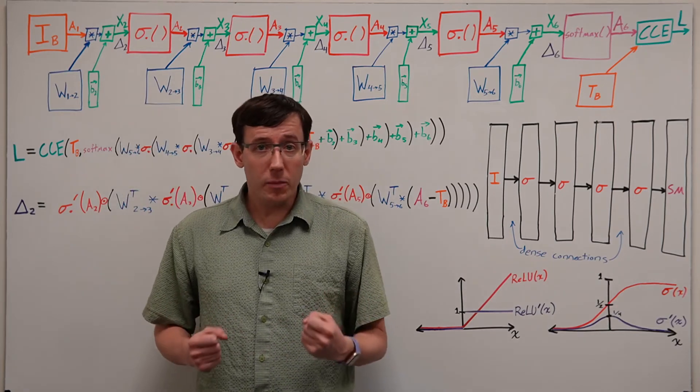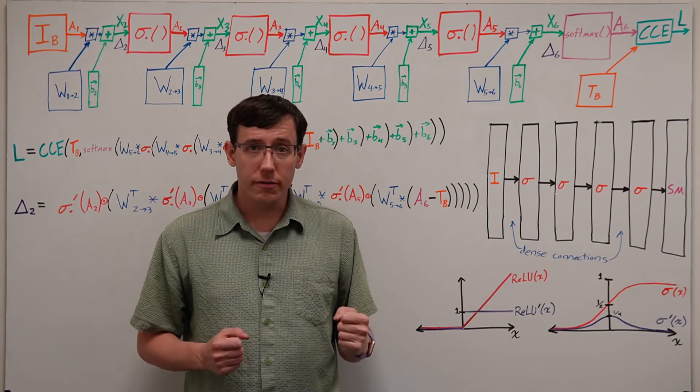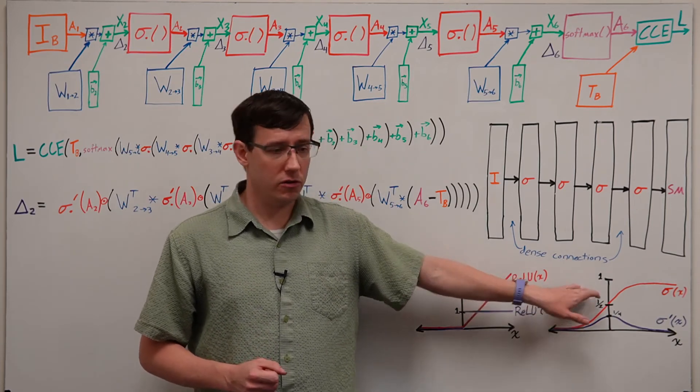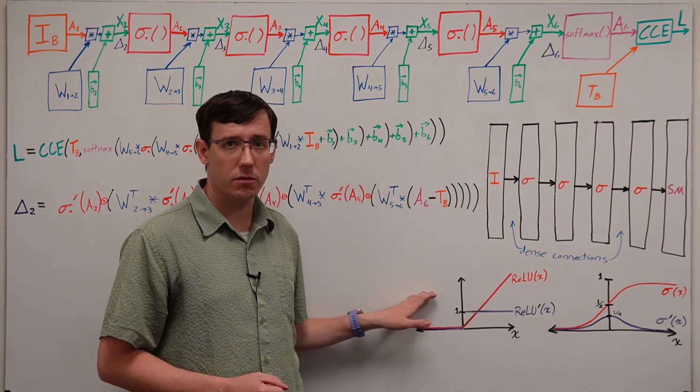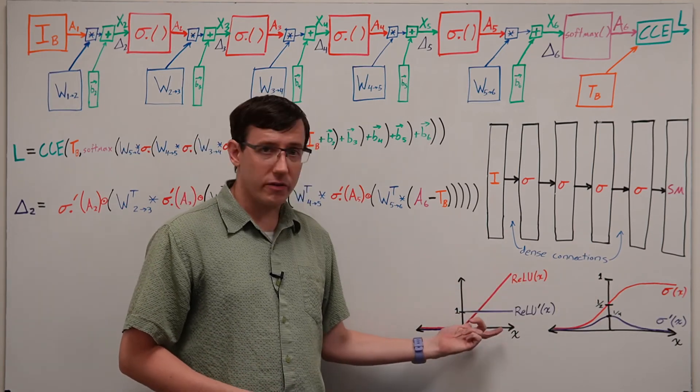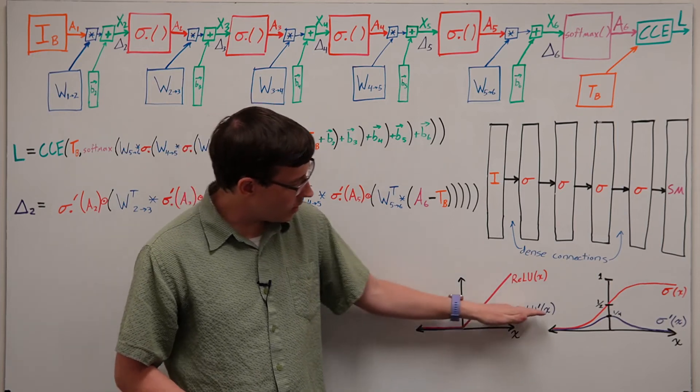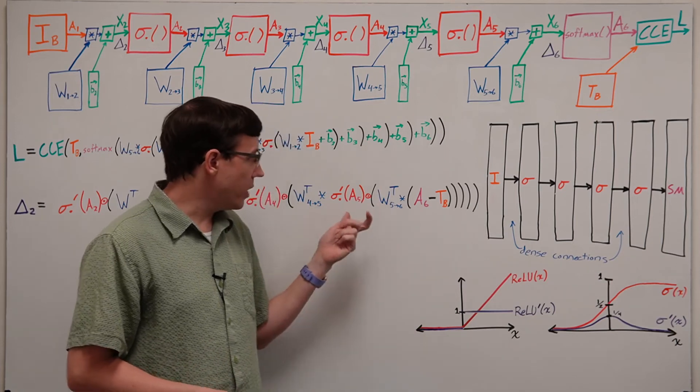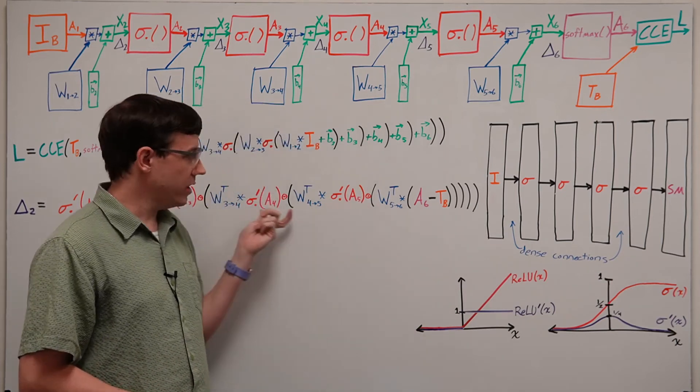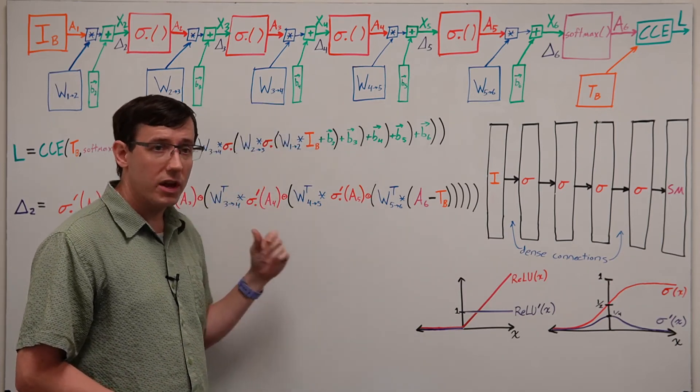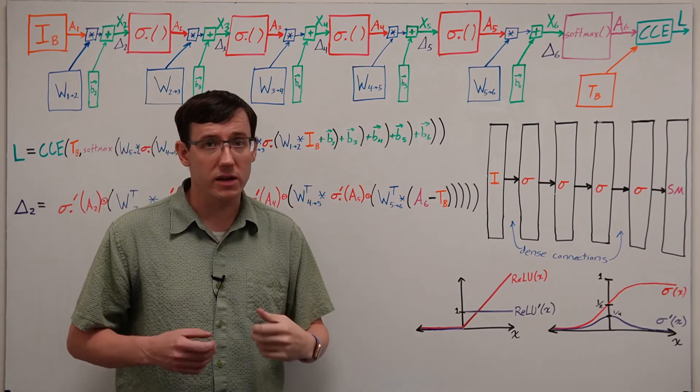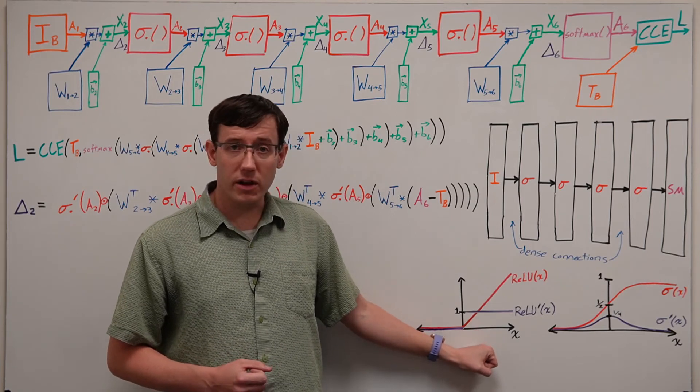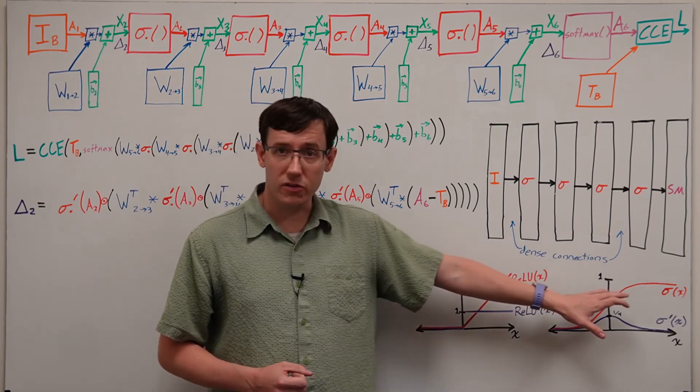But the solution that really made deep neural networks take off is switching away from sigmoid activations towards rectifier linear units. Because the ReLU activation function has a derivative of 1 whenever it has non-zero output, multiplying by ReLU derivatives instead of sigmoid derivatives tends to squish the gradients much less. And this is the number one reason why ReLU activations became more popular than sigmoids.